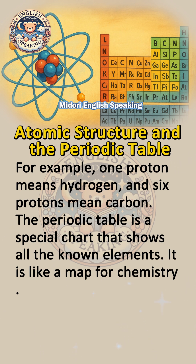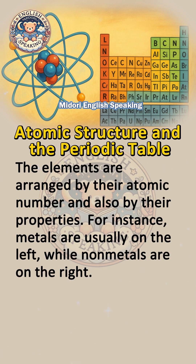The periodic table is a special chart that shows all the known elements. It is like a map for chemistry. The elements are arranged by their atomic number and also by their properties. For instance, metals are usually on the left, while non-metals are on the right.